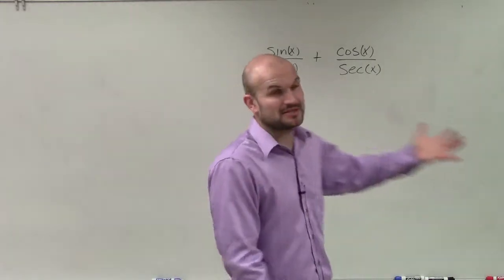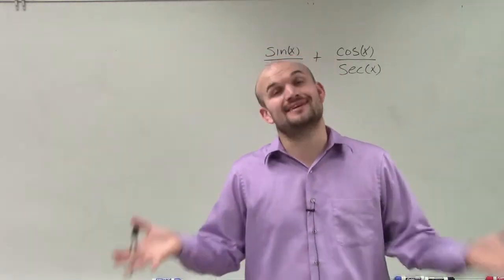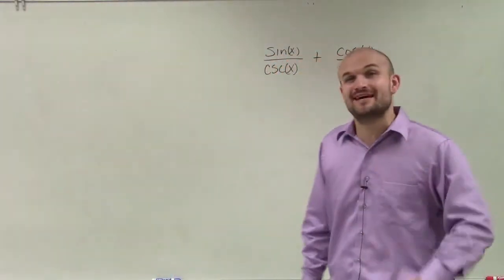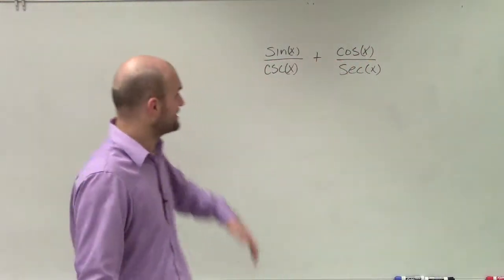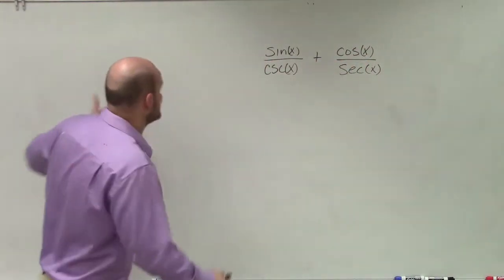Now, initially when looking at this problem, you say, fractions. I don't want to have to add, because we know when we have to add fractions, we have to get common denominators, right? And therefore, we have to find the common denominator between cosecant and secant.